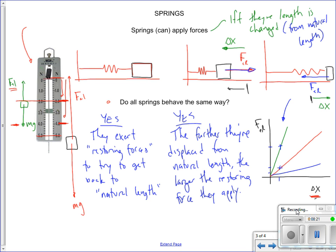But every spring does apply what we call a linear restoring force. Restoring in that it tries to get back to natural length. Linear, meaning that there's a direct relationship between how far it's displaced and how much force the spring exerts.